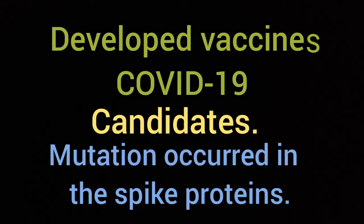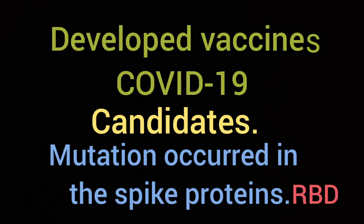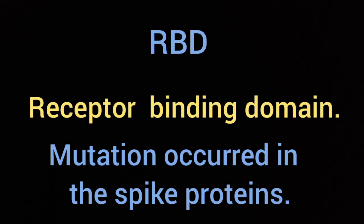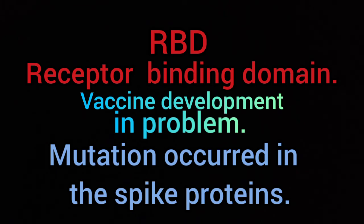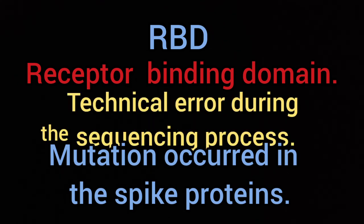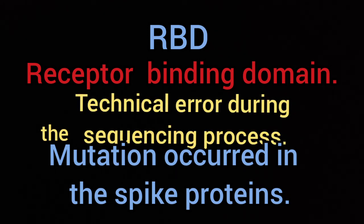Researchers found that mutation occurred in the spike protein's RBD — RBD means receptor binding domain. The RBD mutation could put the developers of the COVID-19 vaccine in a difficult position. Some say the RBD mutation is due to technical error during the sequencing process.